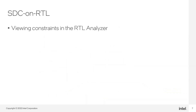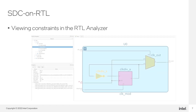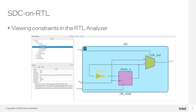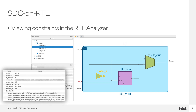After analysis and elaboration, you can invoke the RTL Analyzer from the Compilation Dashboard. The RTL Analyzer GUI allows you to view the constraints on the elaborated design netlist. Using the Property Viewer, you can view constraints targeting a selected object, allowing you to confirm that the constraints target the intended nodes in your RTL design.